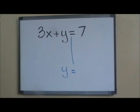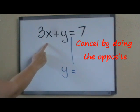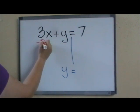As I see my equation, I notice that I have a 3x on the same side as the y. So what I have to do is cancel this 3x by doing the opposite. The opposite of 3x is negative 3x.